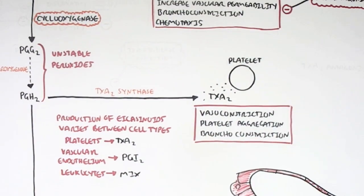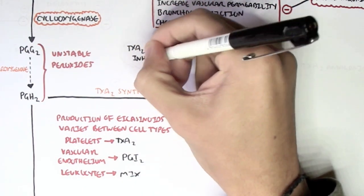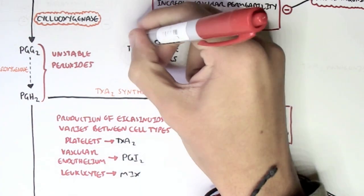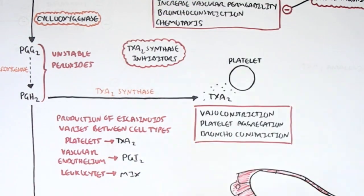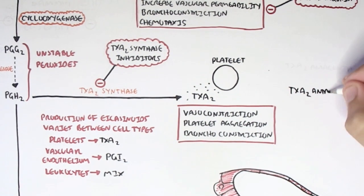There are also drugs which inhibit thromboxane A2 production or the function of thromboxane A2. We have thromboxane A2 synthase inhibitors as well as thromboxane A2 antagonists which prevent the function of thromboxane A2.